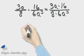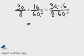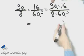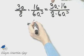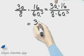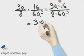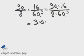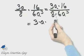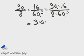To simplify, we're looking for common factors. You can write the prime factorization of each number if you'd like. But if you want to save time, you can also simply look for common factors amongst numbers in the numerator and denominator.